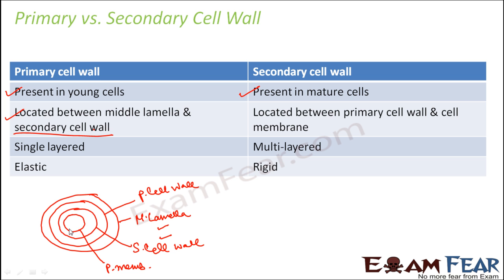Secondary cell wall is located between the primary cell wall and the cell membrane. Primary cell wall is single-layered, whereas secondary cell wall is multi-layered — it has multiple sub-layers formed as the plant matures. Primary cell wall is comparatively elastic and flexible, whereas secondary cell wall is rigid. This is why young plants are soft and tender, but as they grow and become mature they become more hard, rigid, and tough.